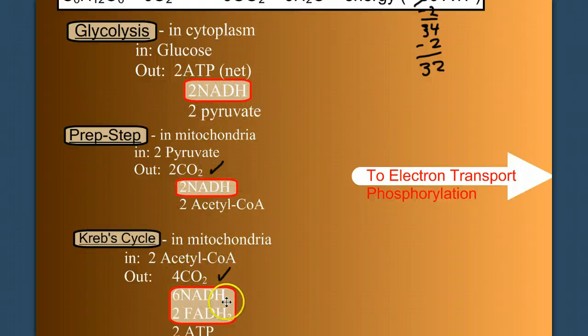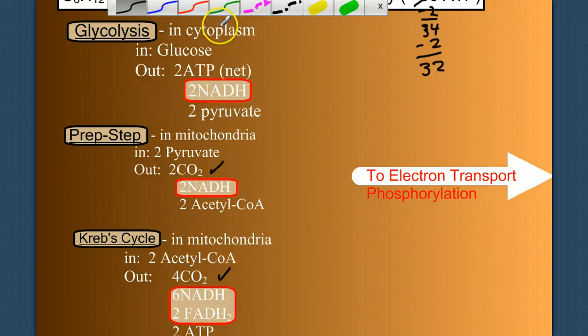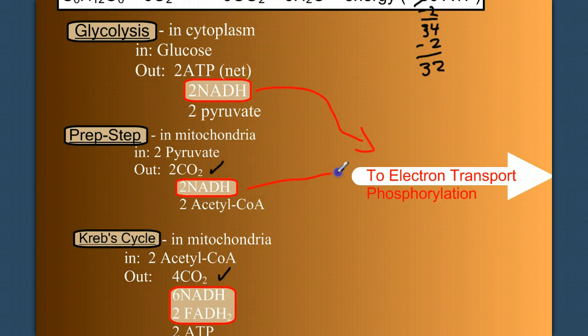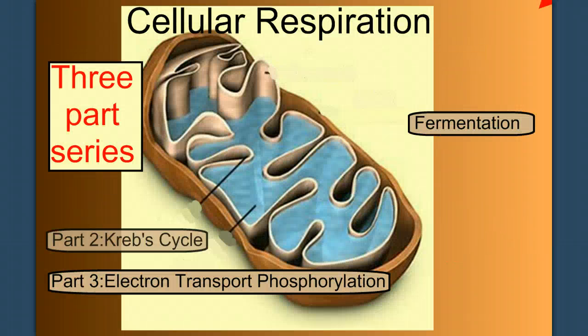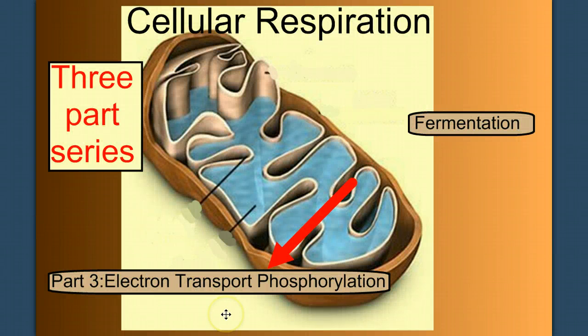two from glycolysis, two from the prep step, six from the Krebs cycle, plus these two FADH2. All of these molecules are going to be sent to the electron transport chain for electron transport phosphorylation. There's still a lot of energy that we have to tap into in these molecules, in fact, the majority of that energy. And notice we've yet to use oxygen and we still haven't made water, so there's a lot more to do. So come back to the next video on electron transport phosphorylation. You can find the link here.